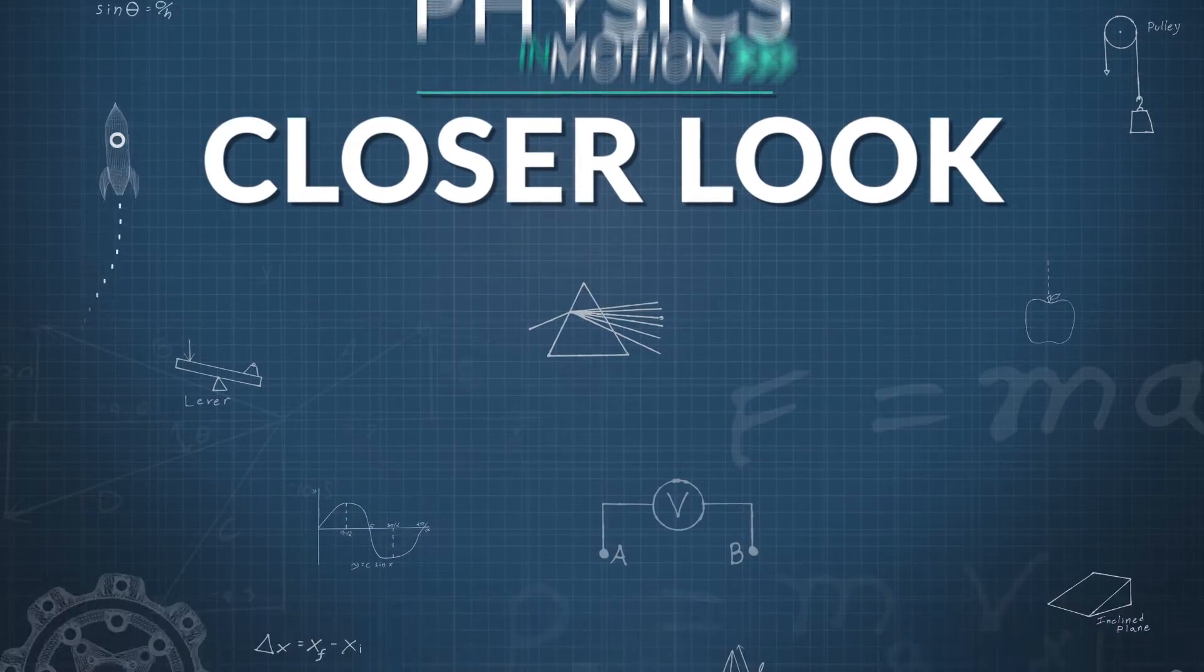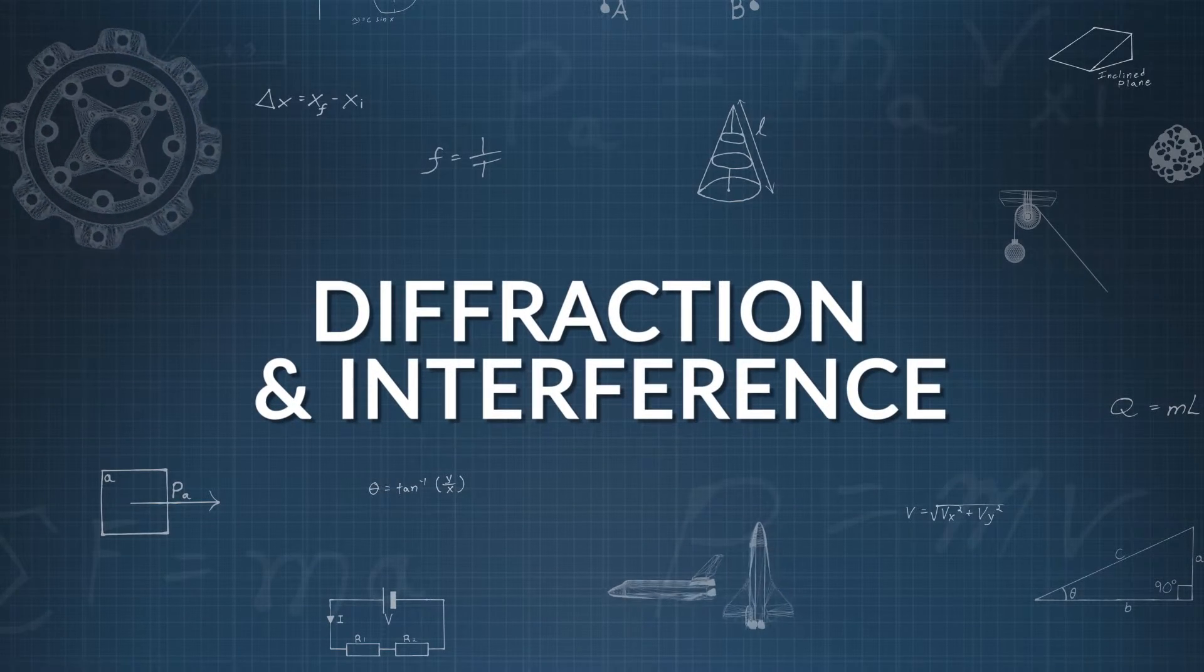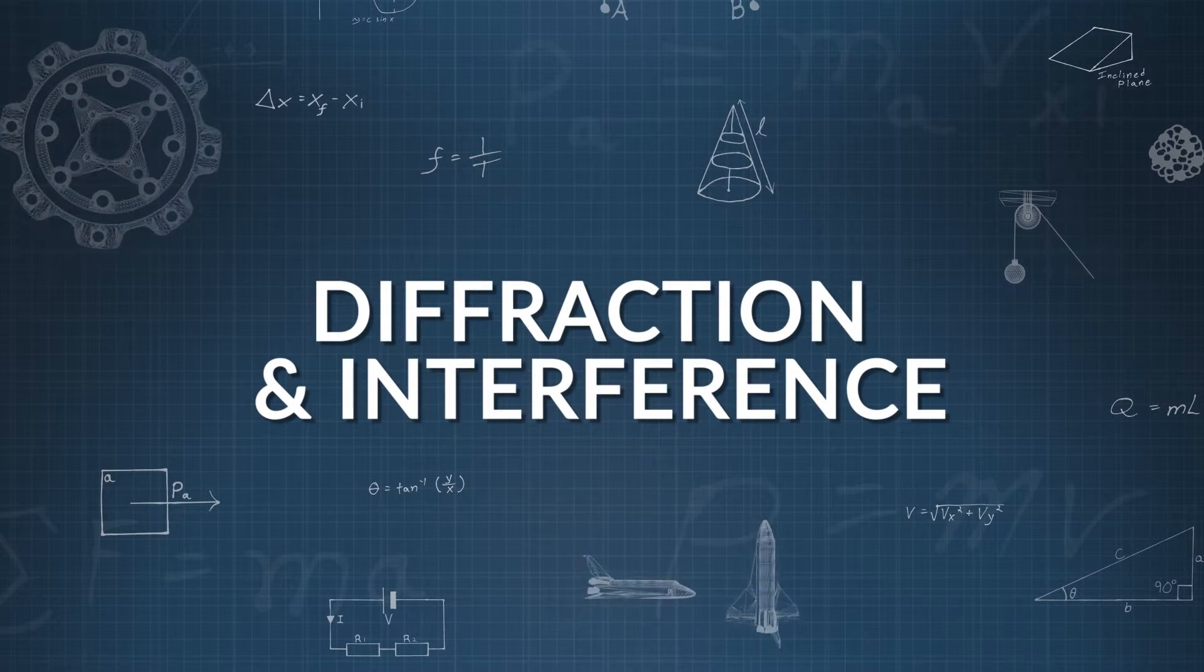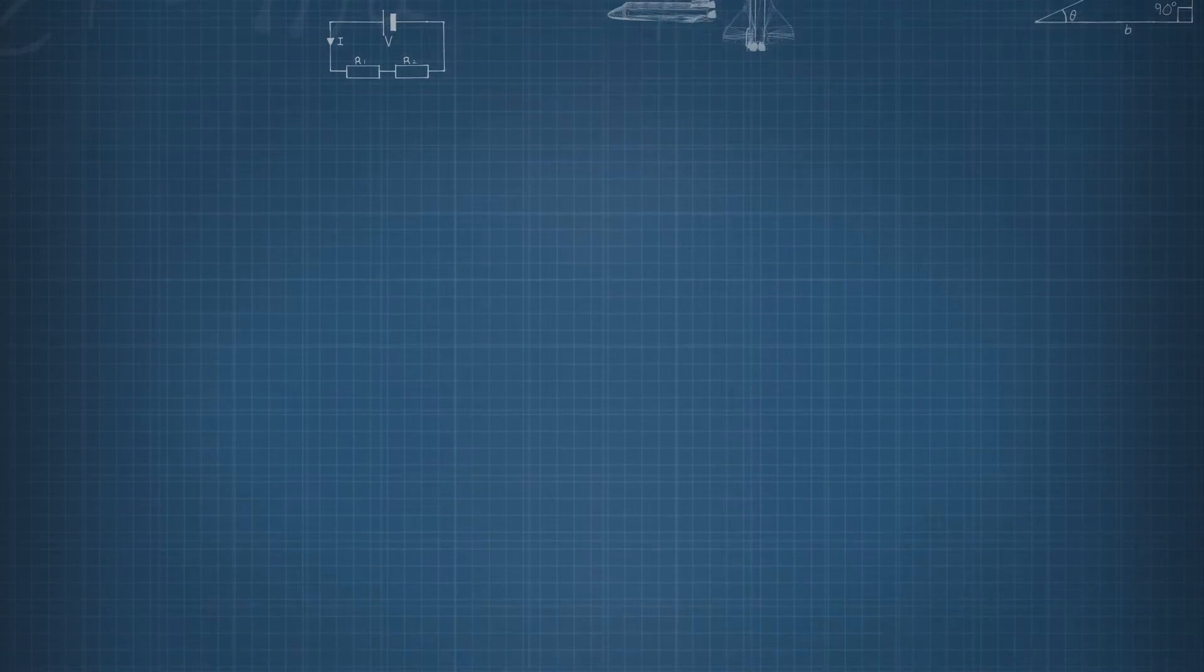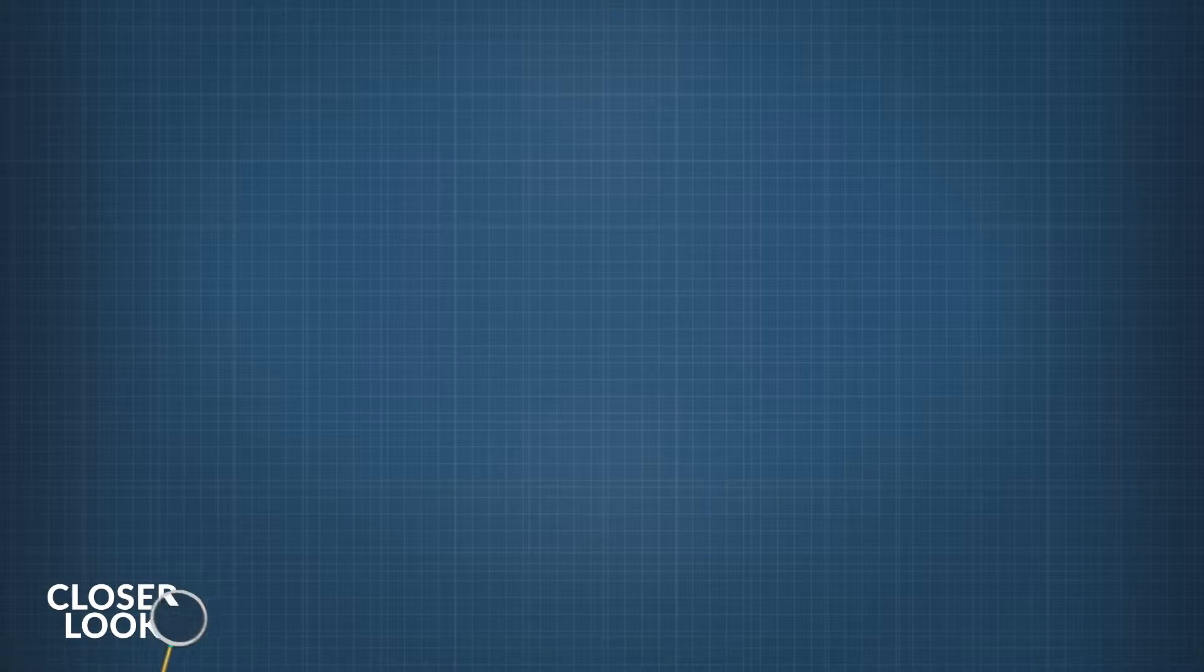In this video, we're going to take a closer look at diffraction and interference. We've looked at different sorts of waves: waves on a string, waves in the air, light waves, and water waves.